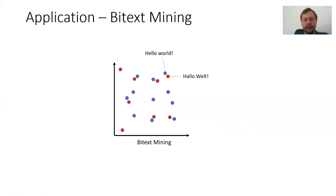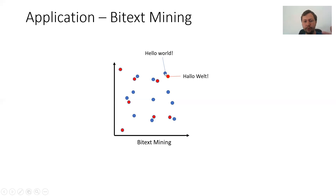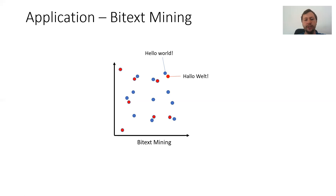Another application is bitext mining. You take a large corpus — for example, the English Wikipedia — encode all its sentences in the vector space as blue points. Then you take all sentences from the German Wikipedia and put them in the vector space as red points. You then find blue-red point pairs which are close in vector space; for example, a pair could be 'Hello World' and 'Hallo Welt'. These are good candidates for parallel data. People use this approach to mine parallel data to train neural machine translation models, taking large corpora like Wikipedia or Common Crawl and finding sentence pairs close in the vector space.